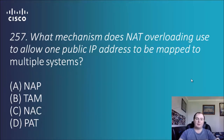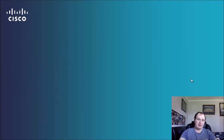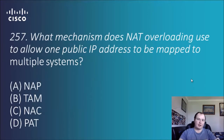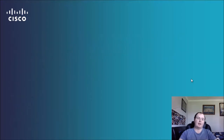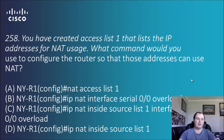Question 257: what mechanism does NAT overloading use to allow one public IP address to be mapped to multiple systems — NAT, TAM, NAC, or PAT? The answer is D, PAT — port address translation. That's the answer once again, PAT.